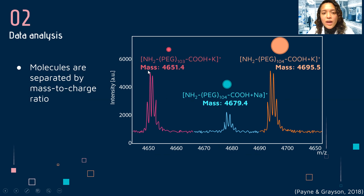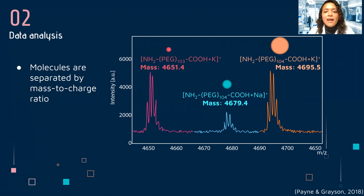We will have a number, like 4651.4, and this number we will go to a database and search for which molecule has that kind of mass. From there, we can actually know the molecules we are dealing with.